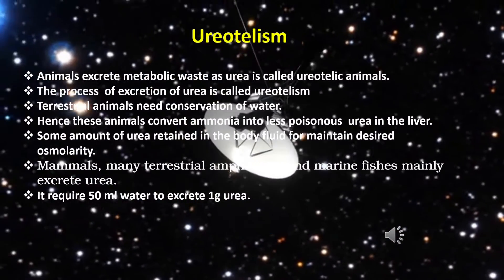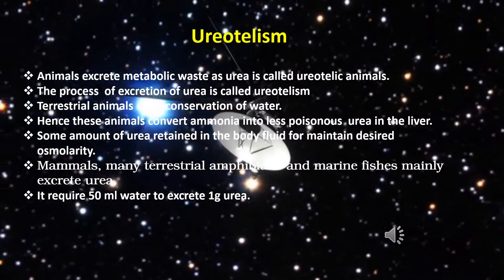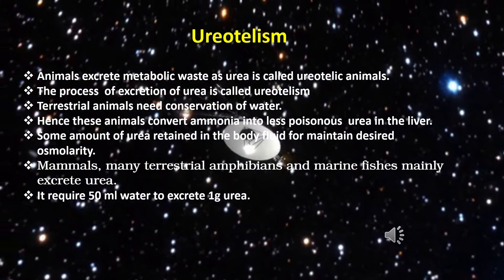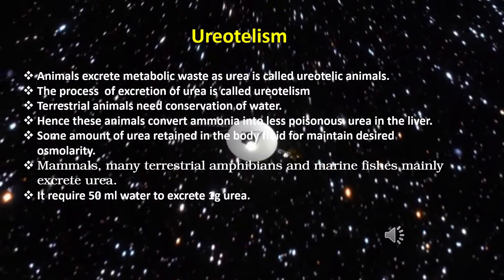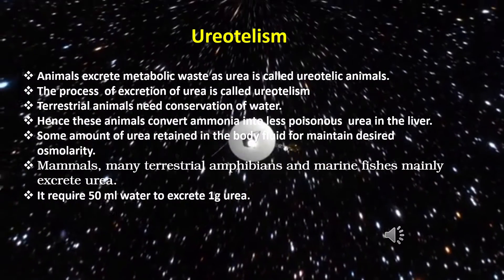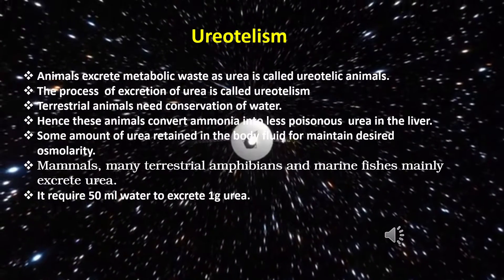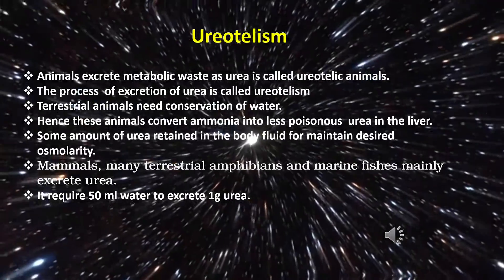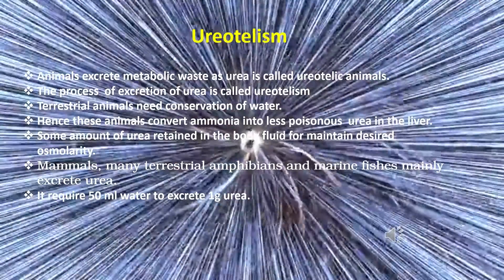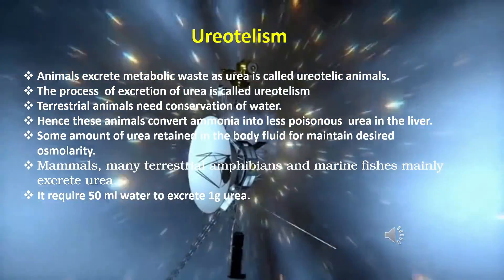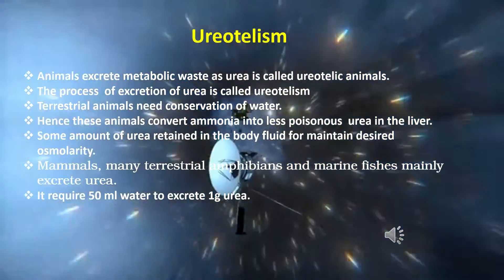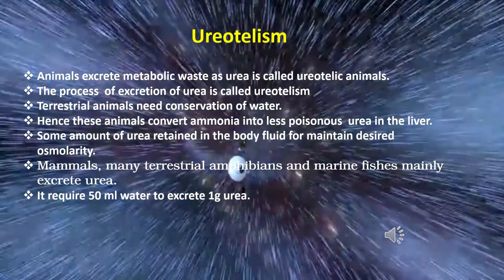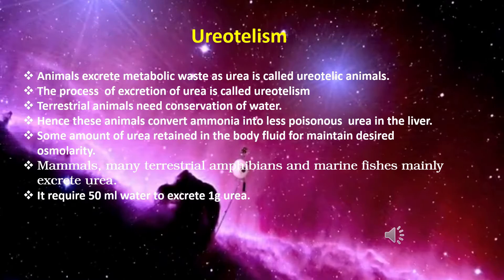Animals that excrete metabolic waste as urea are called ureotelic animals, and the process is called ureotelism. Terrestrial animals need to conserve water, hence these animals convert ammonia into less poisonous urea in the liver. Some amount of urea is retained in the body fluid to maintain the desired osmolarity. Mammals, many terrestrial amphibians, and marine fishes mainly excrete urea. It requires 50 milliliters of water to excrete 1 gram of urea.